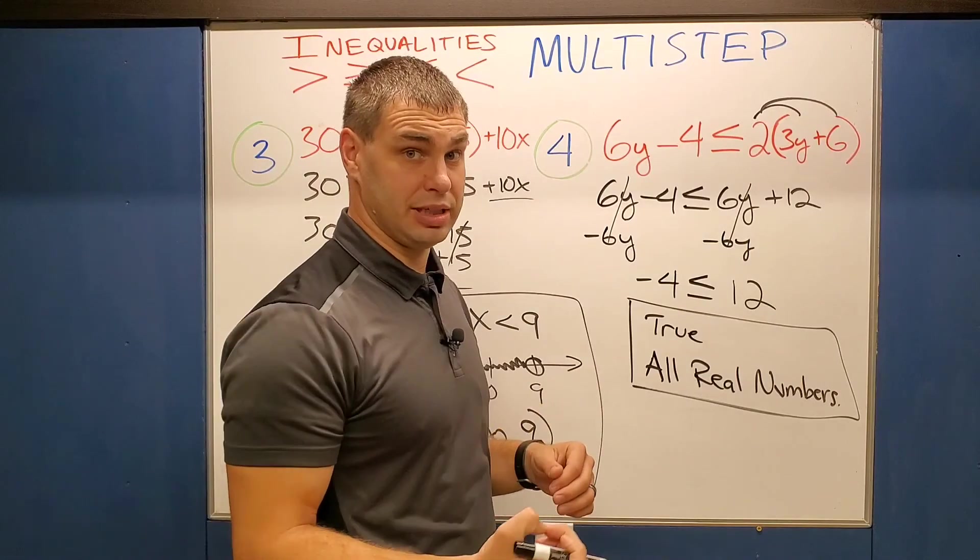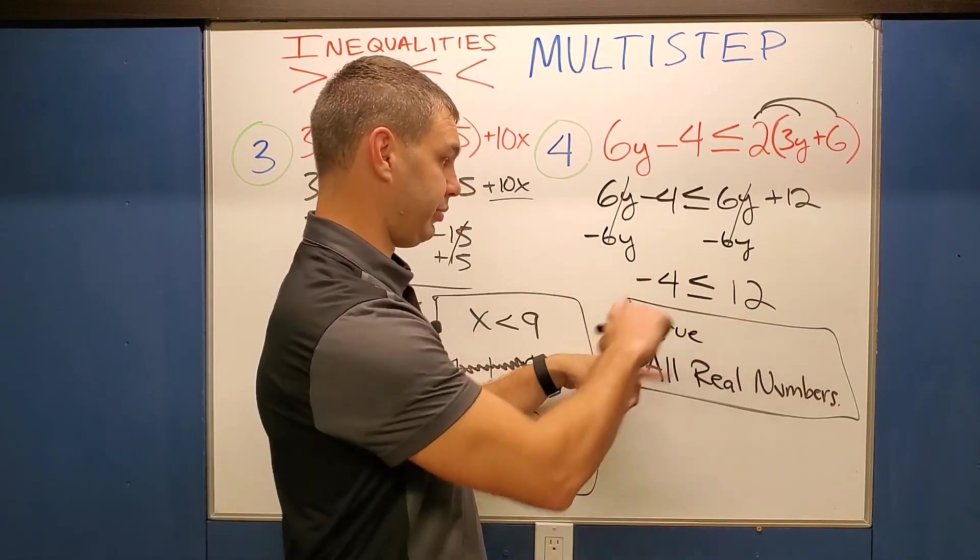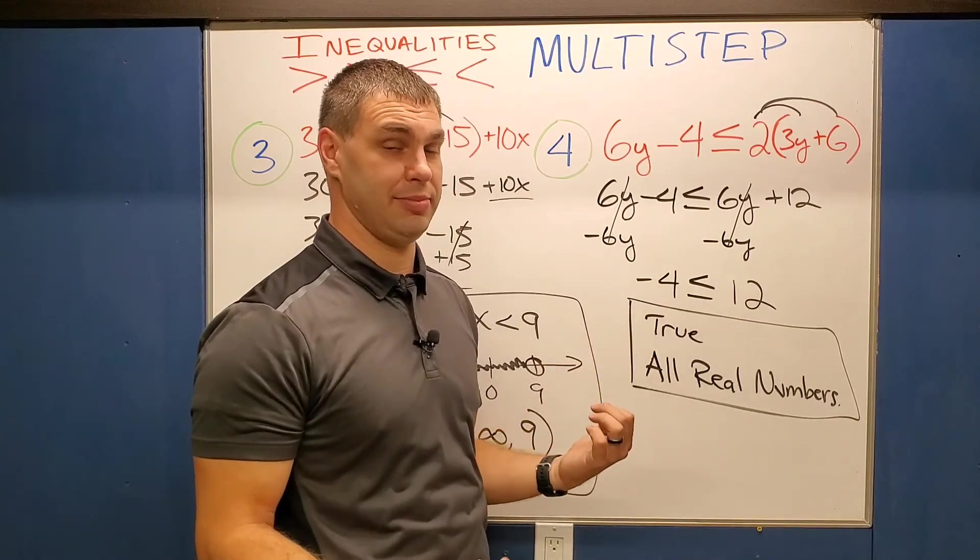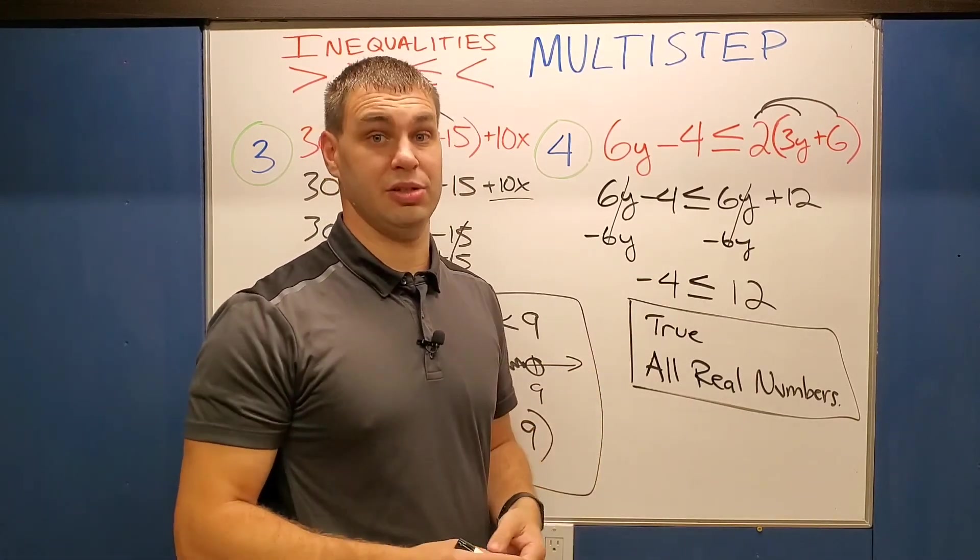And then real quick, if you would have got something that was false, maybe it was flipped around. Maybe 12 is less than or equal to negative 4. That would be a false statement. Then of course, there's just going to be no solution.